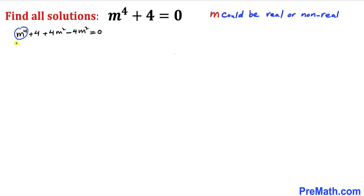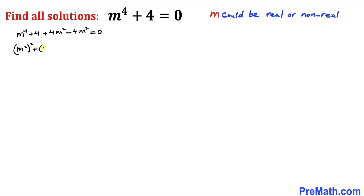Now let's tweak this: m⁴ can be written as (m²)², and likewise 4 can be written as 2². So therefore we can write (m²)² + 2² + 4m² - 4m² = 0.